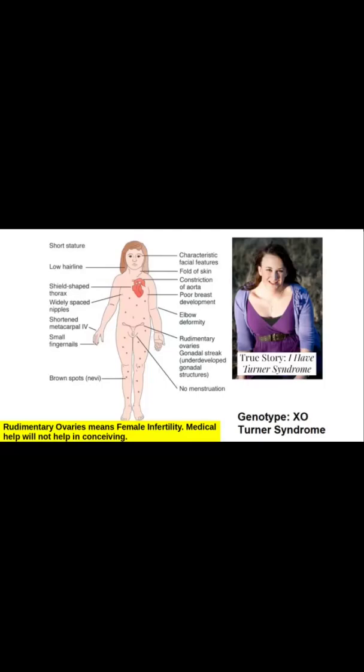Babies born with XO chromosome DNA have only 45 chromosomes instead of 46 — often called Turner syndrome. They have rudimentary ovaries, and after growing up, conceiving is not possible at all; there is no remedy for the infertility. Features of an XO syndrome person include: short stature, no menstruation, rudimentary ovaries, elbow deformity, small breasts, widely spaced nipples, small fingernails, and brown spots on skin. Medical help will not help in conceiving.